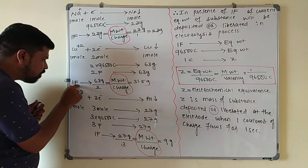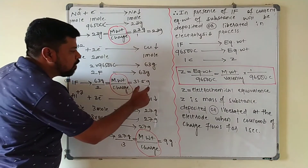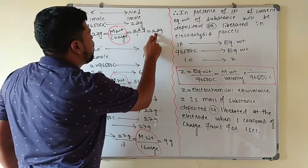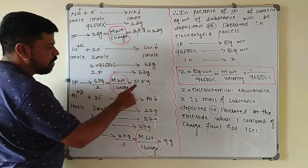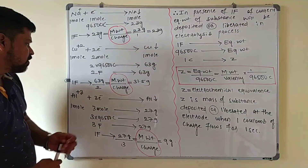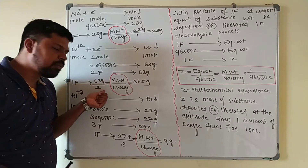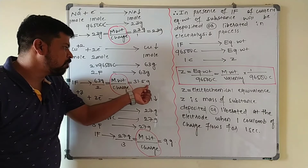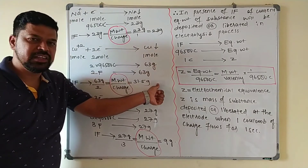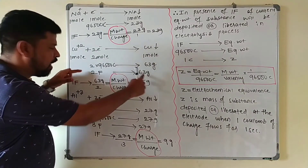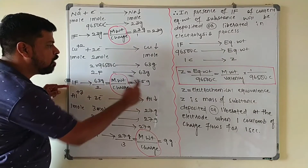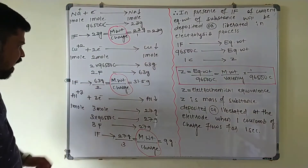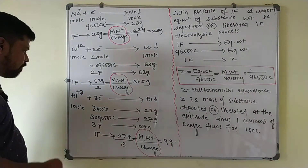So we can conclude: in the presence of one Faraday of current, the equivalent weight of any substance is deposited. One Faraday deposits the equivalent weight of sodium (23 grams), and one Faraday deposits the equivalent weight of copper (31.5 grams). Two Faradays deposit 63 grams of copper; one Faraday deposits 31.5 grams.